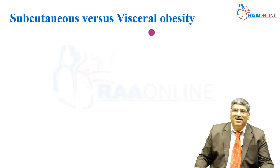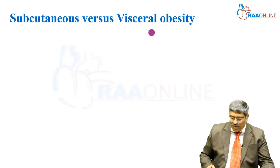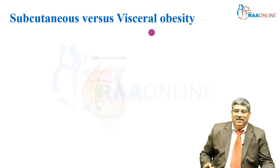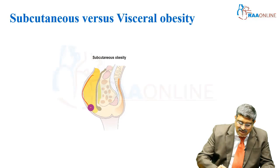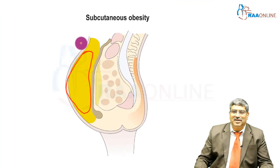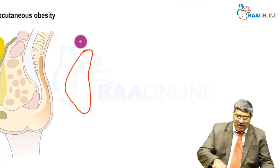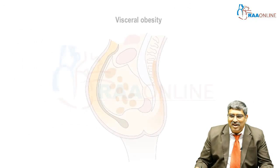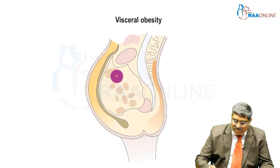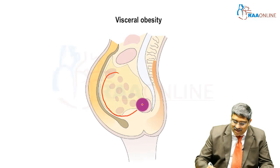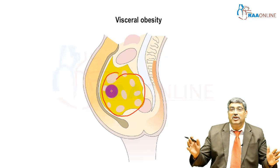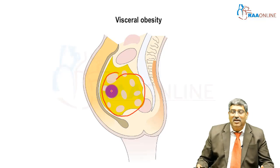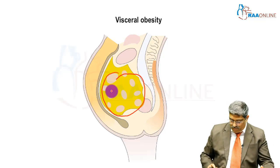Coming to another classification: subcutaneous or visceral obesity. In subcutaneous obesity, fat gets deposited in the subcutaneous part. In visceral obesity, fat gets deposited in the visceral part and slowly expands, affecting the visceral organs.